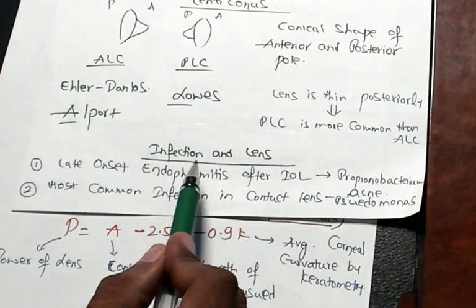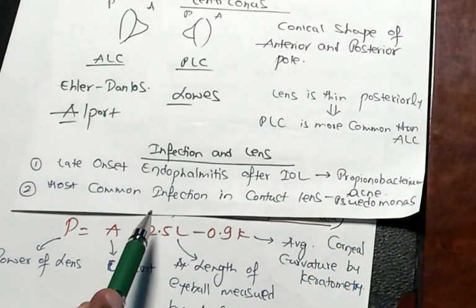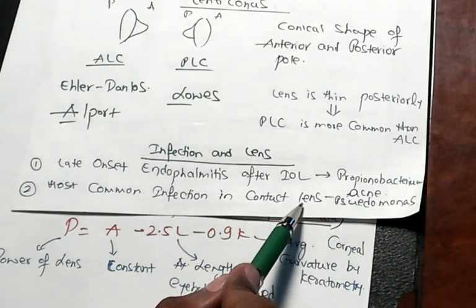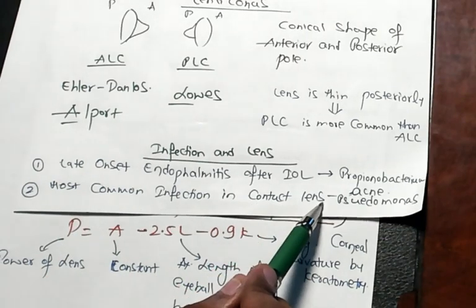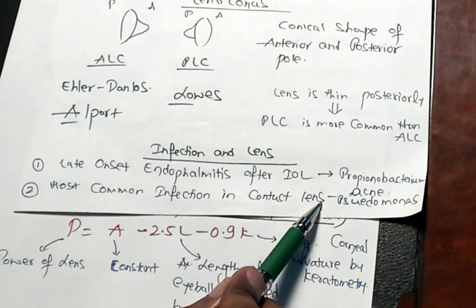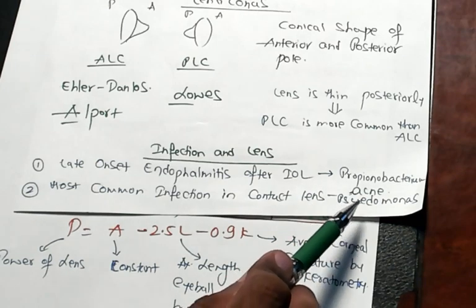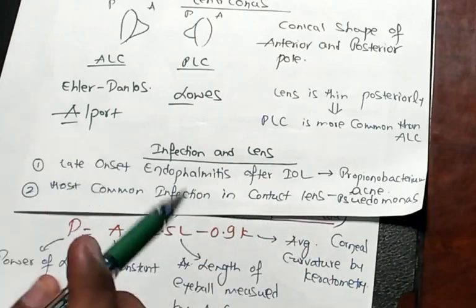What is the most common cause? Propionibacterium acnes. You have placed a contact lens, what is the most common infection? Don't tell me Acanthamoeba. It is Pseudomonas. Pseudomonas is the most common infection in contact lens.